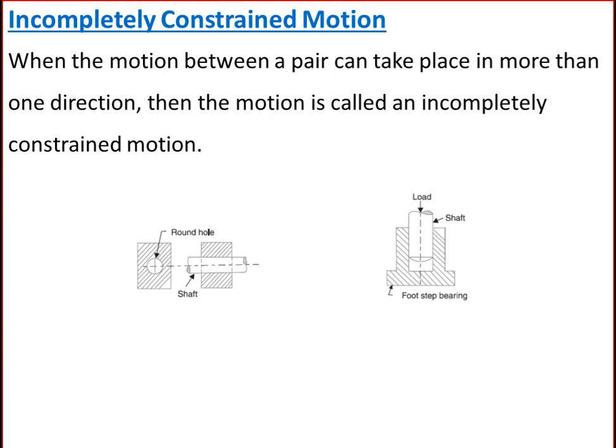Next is incompletely constrained motion. When the motion between a pair can take place in more than one direction, the motion is called incompletely constrained motion. The change in the direction of impressed force may alter the direction of relative motion between the pair. A circular bar or shaft in a circular hole is an example, as it may either rotate or slide in the hole — these two motions have no relationship with each other.